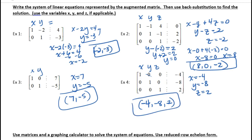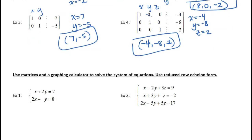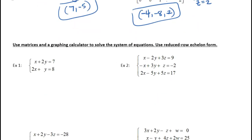Now we're going to use the graphing calculator to solve systems of equations using reduced row echelon form. The first thing you'll want to do is rewrite the system as an augmented matrix. Look at the little blue letters underneath the word MATH on your calculator — it says MATRIX. You'll go 2nd and inverse to get the matrix menu.